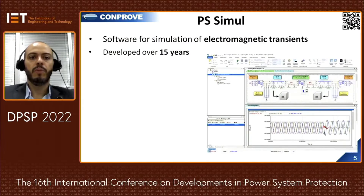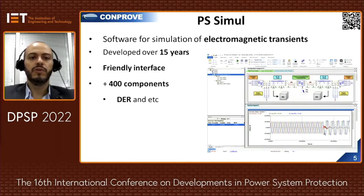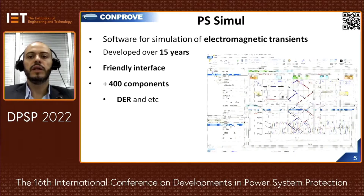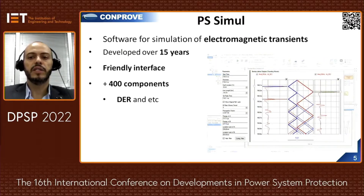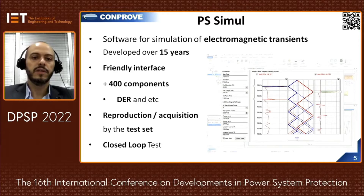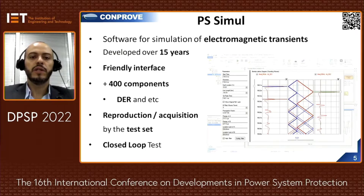The BSCMU power system simulator software is a dedicated software for simulation of electromagnetic transients, developed over approximately 15 years. It features a user-friendly interface and a library with more than 400 components, including components to simulate distributed energy resources like wind farms and solar panels, and includes the Bewley lattice diagram for TW analysis. The software communicates with the test sets, allowing reproduction and acquisition of simulated signals, and enables closed-loop testing.